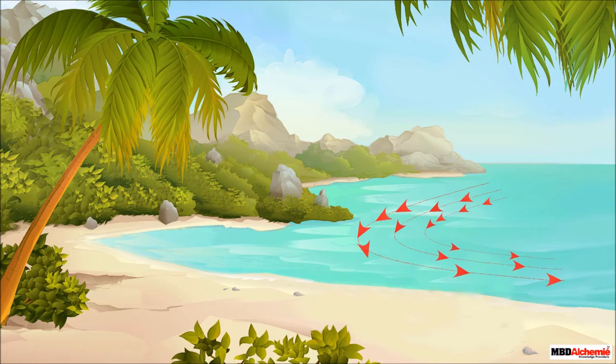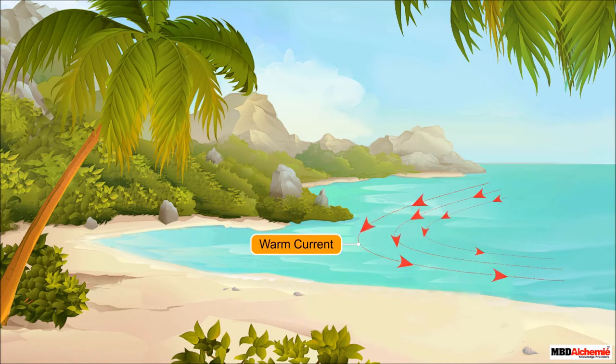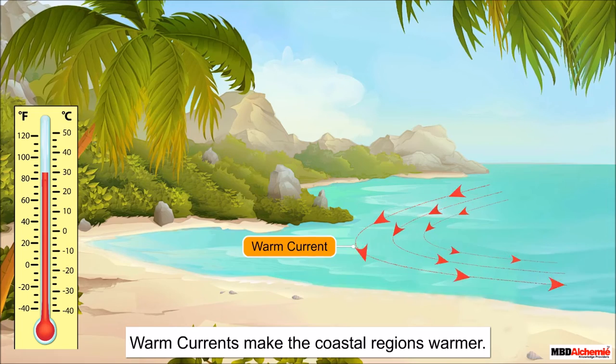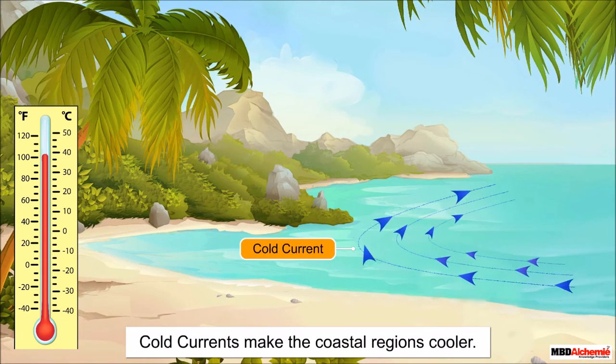Sometimes an ocean current modifies the coastal climate such as a warm current raises the temperature along the coast whereas a cold current lowers the temperature.